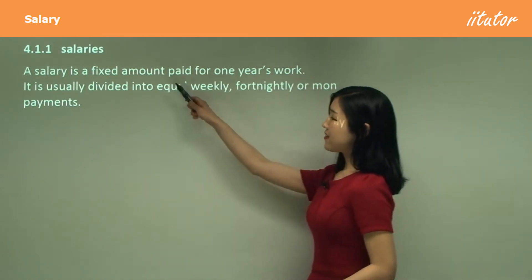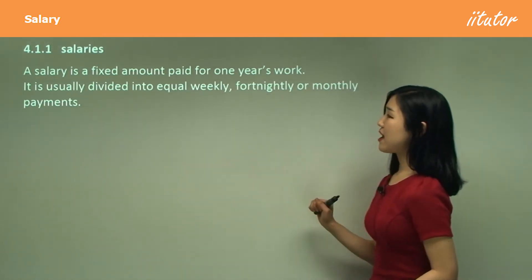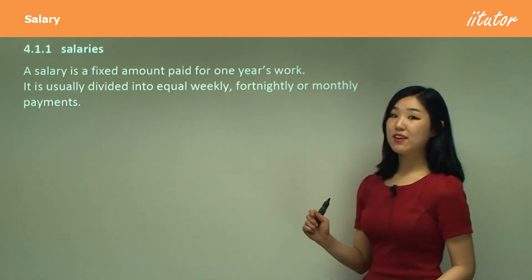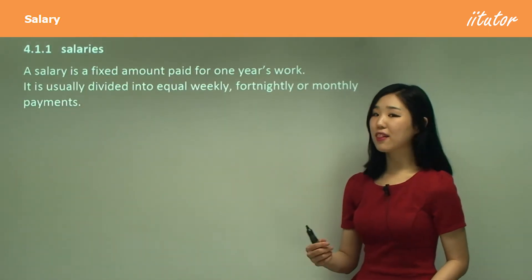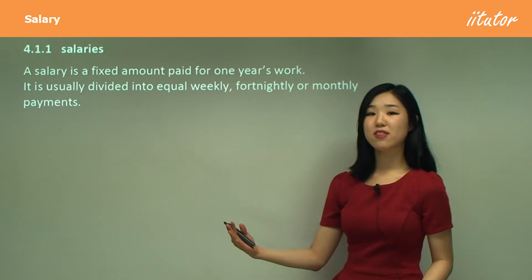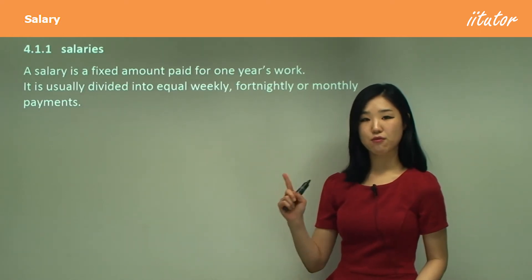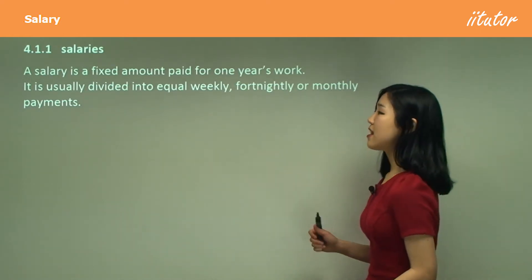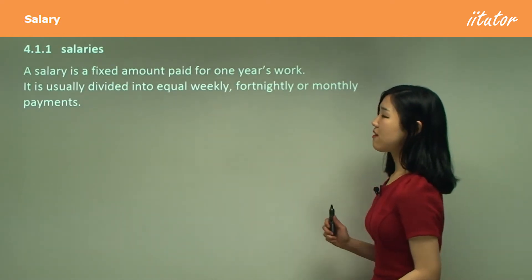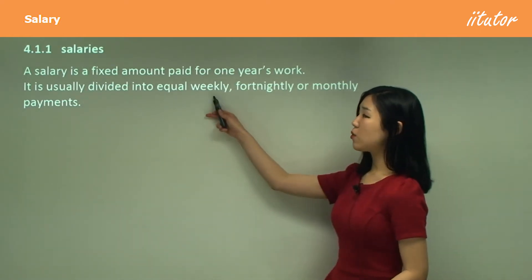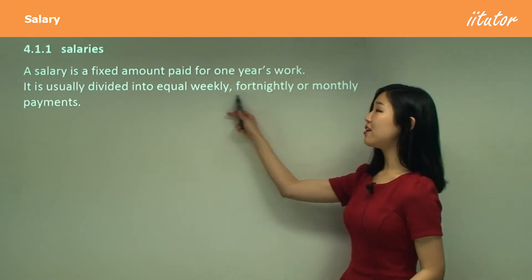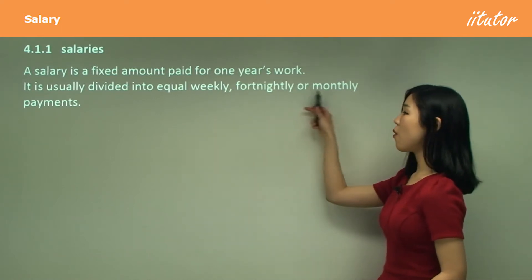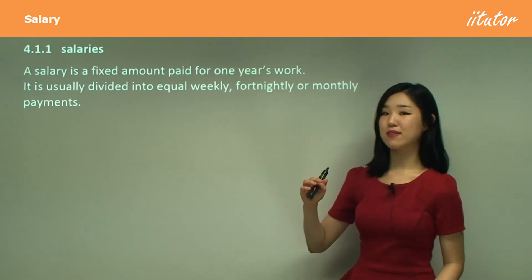A salary is a fixed amount paid for one year's work. So a salary is basically the amount that you get for one year's worth of work. Now it is usually divided into equal weekly, fortnightly or monthly payments.